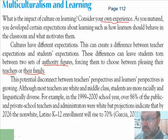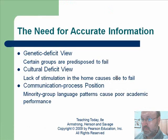This potential disconnect between teachers' and students' perspectives is growing. Although most teachers are white and middle class, students are more racially and linguistically diverse. For example — and this is older data — in the 1999–2000 school year, 86% of teachers and administrators were white. But projections indicate that in 2026, non-white K–12 enrollment will be 70%. So 86% of teachers are white, but 70% of the kids are not white. We'd like some kind of balance.